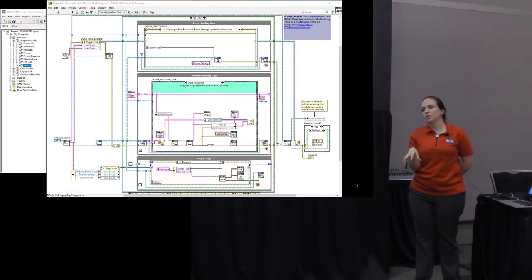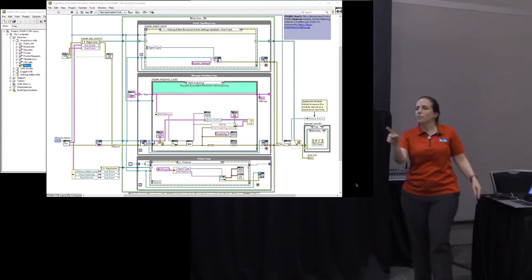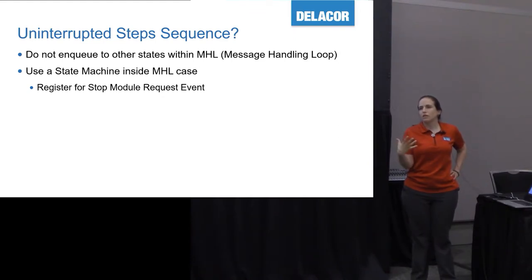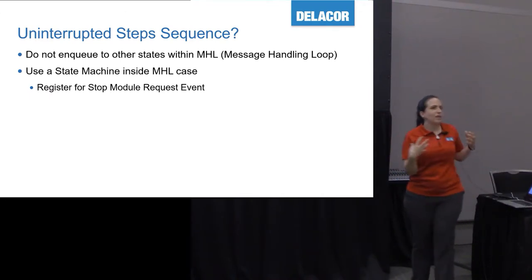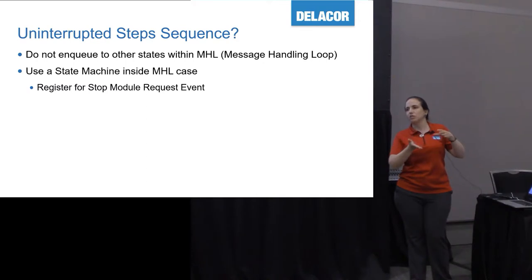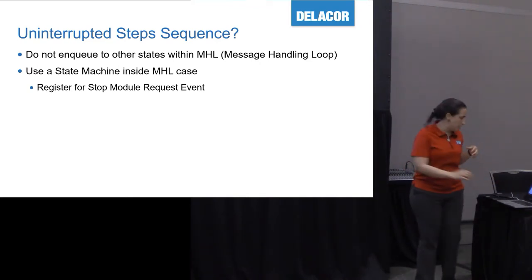Audience question: why a helper loop rather than just another DQMH module? Because this module is the acquisition module, and if you do another module that does acquisition, why is the first acquisition module for? You still have the same problem of asking it to acquire continuously. Uninterrupted step sequence: this is something I get asked on the forums a lot — what if I want to do step one, step two, step three? The instinct of a LabVIEW developer is to get an array of messages and queue them, and the queue message handler will enqueue the states. That's okay if you don't care about anything getting inserted between your steps. But if the sequence must be uninterrupted, you should not be doing simple enqueuing.